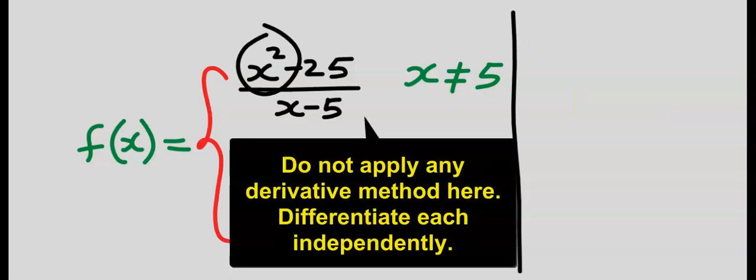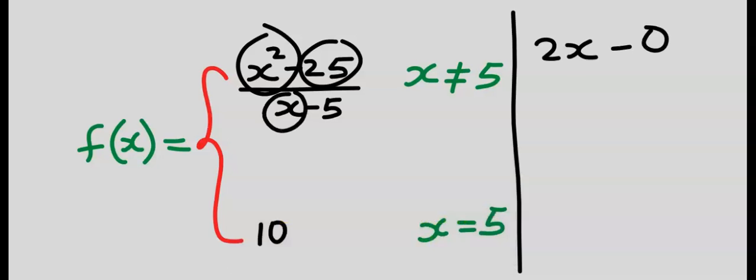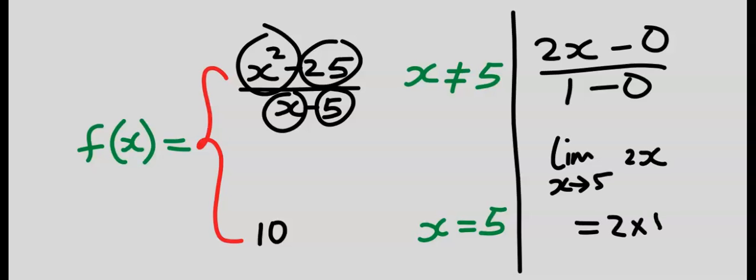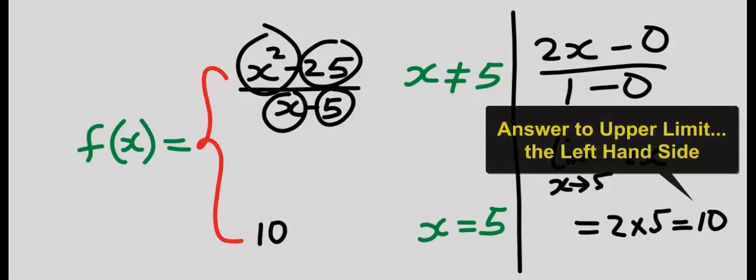By differentiation: if you differentiate x squared you're going to get 2x, if you differentiate 25 you get zero. If you differentiate x you get one, if you differentiate 5 you get zero. Hence, if you take the limit as x tends to 5, you get 2 times 5 and your answer is 10.